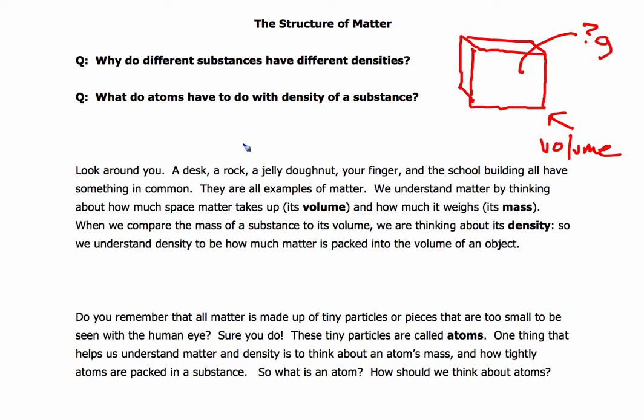As we're starting to think about matter, here are some questions we need to think about: why do different substances have different densities? We've seen this in the FET lab — the boxes all had different densities. And then, what do atoms have to do with the density of a substance? So as we actually begin to study the structure of matter and atoms, we're really thinking about density. It really is all about density.